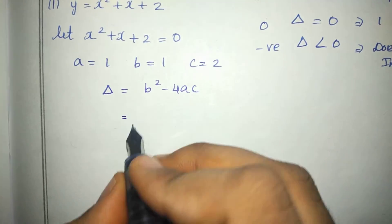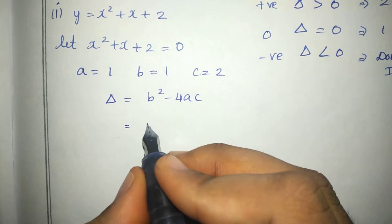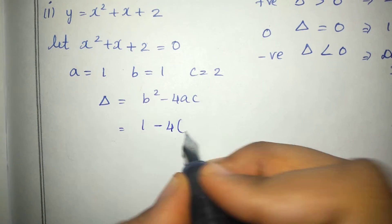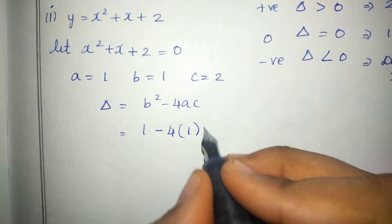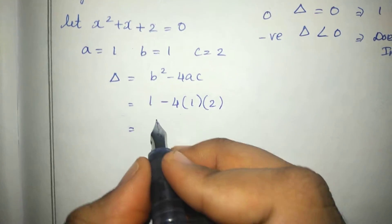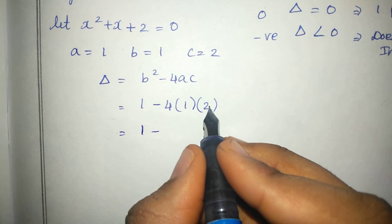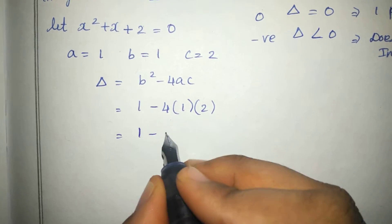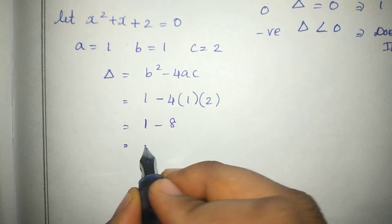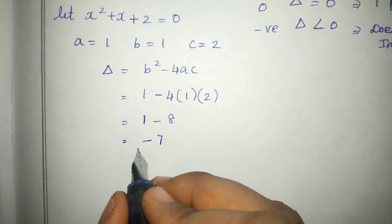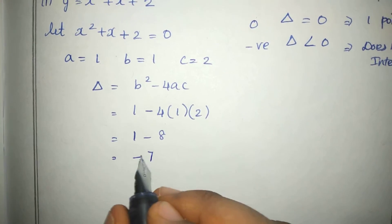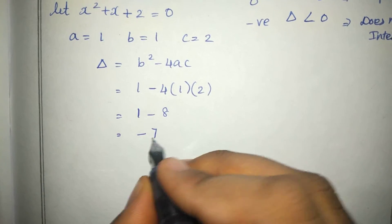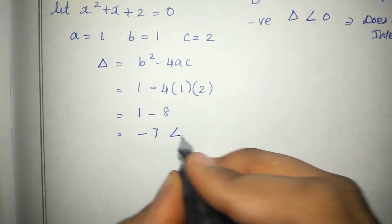Discriminant is equal to: b value is 1, so 1 squared is 1, minus 4 into a value 1, into c value 2. That gives us 1 minus 4 times 2 which is 8. So 1 minus 8 is equal to minus 7. Discriminant is negative, less than 0.